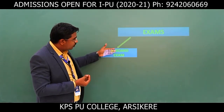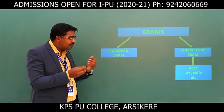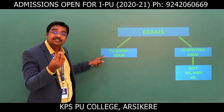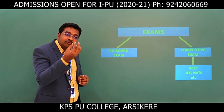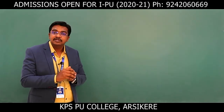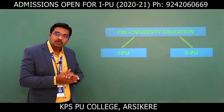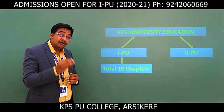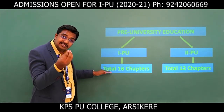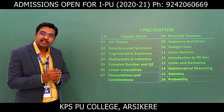Now let's discuss some introduction about the exams. You face two types: board exams and competitive exams. For the PUC levels, First PU has a total of 16 chapters and Second PU has a total of 13 chapters.